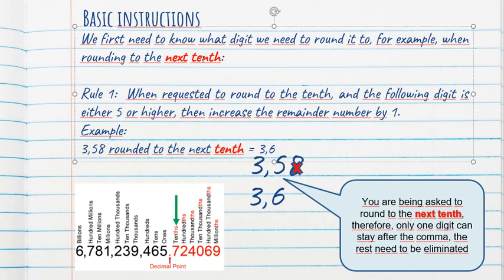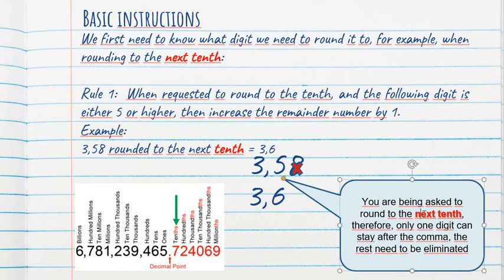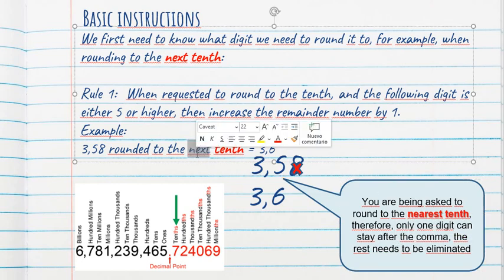Had I told you to round it to the nearest hundredth, is the same thing. You just have to take into consideration, what number are you erasing? You are erasing this. Is it higher than five, or even five? Yes. So you delete it, but the number that you are keeping increases by one. I put you here the arrow, so that you remember how many decimals I'm asking from you. You're being asked to round to the next tenth, therefore, only one digit can stay after the comma. The rest needs to be eliminated.